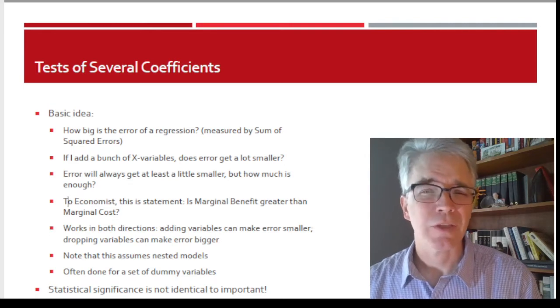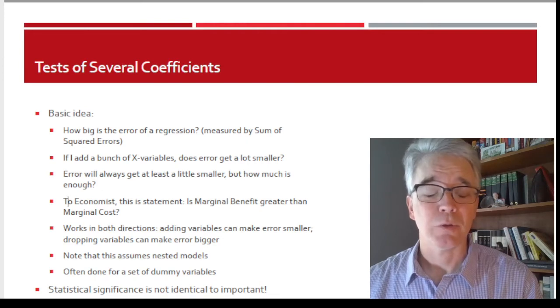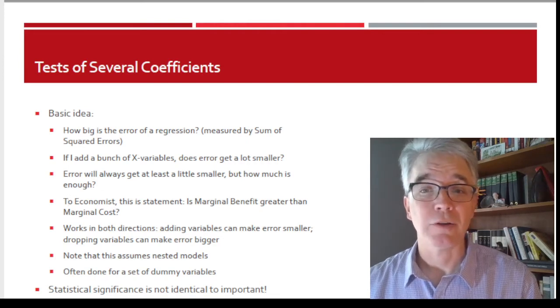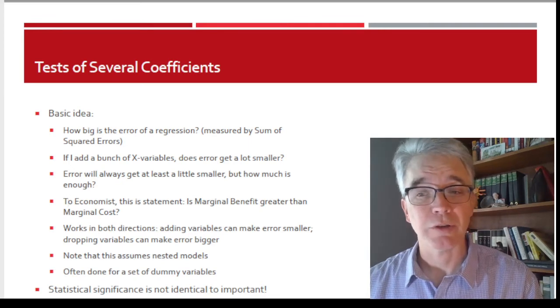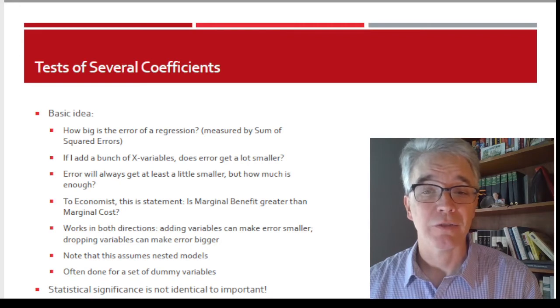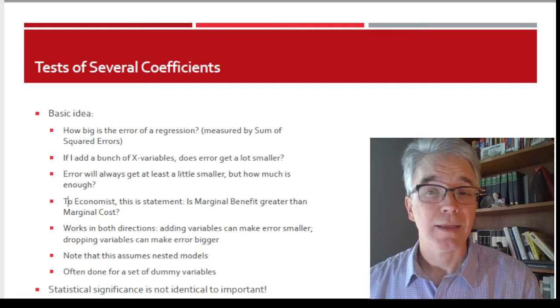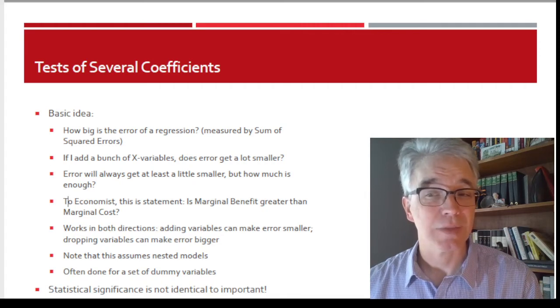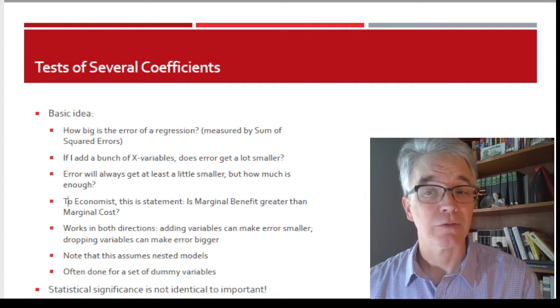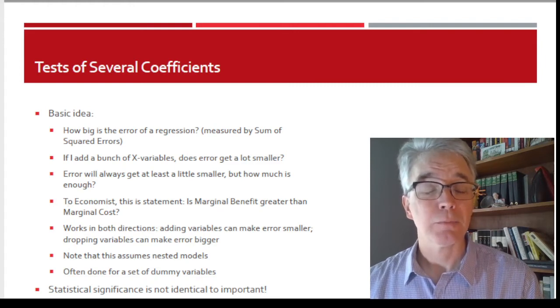I'm going to think about the basic idea of how these tests are set up. The OLS regression is trying to minimize the sum of squared errors, right? It's choosing coefficients, choosing beta coefficients to make the sum of squared errors as small as we can possibly get it. If I add one or more x variables, then the error is certainly not going to increase. It's going to go down, typically.